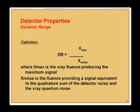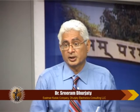If you have detectors that are sensitive to different energies, you could actually overlap them. The dynamic range is a ratio where X-max is the X-ray fluence producing the maximum signal, and X-noise is the fluence producing a signal equivalent to the quadrature sum of the detector noise and the X-ray quantum noise.